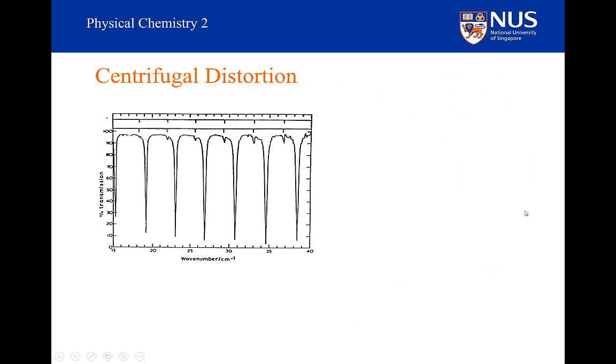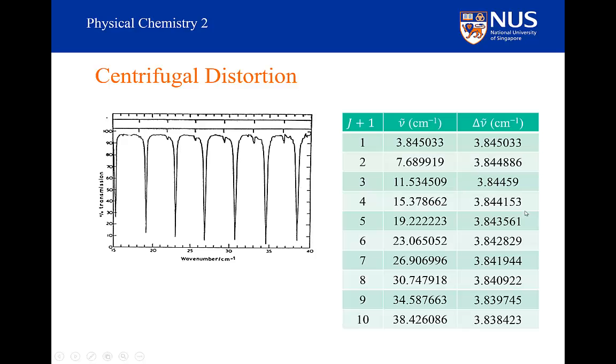How is centrifugal distortion going to affect my spectrum? If we look at the carbon monoxide data for this spectrum, here are the frequencies of each of these lines. In the final column I have reported the frequency gap between adjacent lines. Notice this gap is getting steadily smaller, and the size of these gaps is more rapidly decreasing as we get to higher and higher J values.